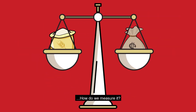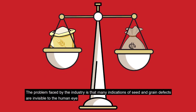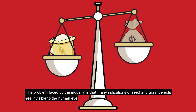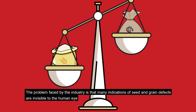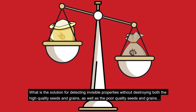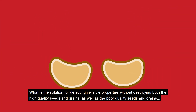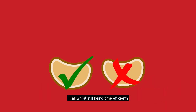Now we understand what seed and grain quality is, how do we measure it? The problem faced by the industry is that many indications of seed and grain defects are invisible to the human eye. So what is the solution for detecting invisible properties without destroying both the high quality seed and grains as well as the poor quality seed and grains, all while still being time efficient?